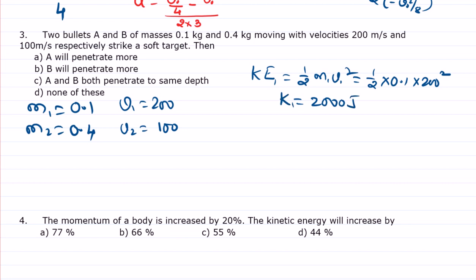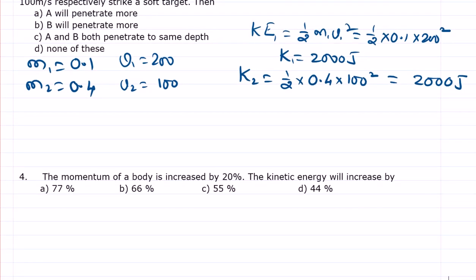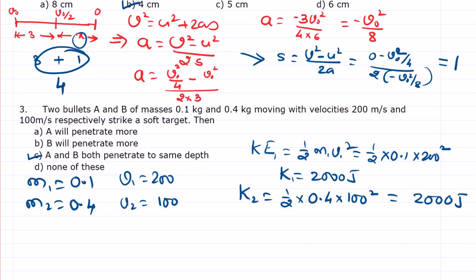Similarly for second one, half, mass is 0.4, velocity is 100². So here it is 0.2, 0.2 into 100 is 20, 20 into 2 is 2000 Joules. See, here we are getting both are same kinetic energy. So therefore, as per the option, A and B both penetrate to the same depth because both have same kinetic energy. Clear? Okay, go for next question.